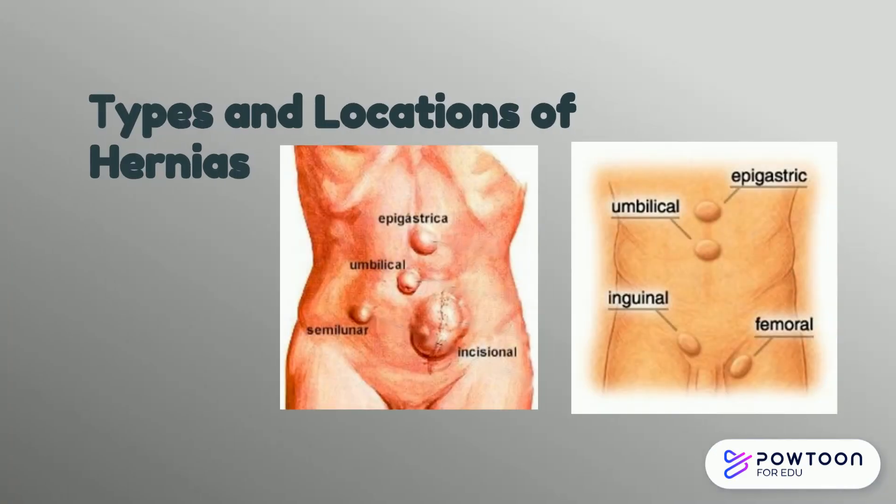While inspecting the abdomen, you may visualize hernias. Here are some frequent sites of hernias. Pay attention to the umbilicus area, the epigastric area, as well as the incisional area. The other frequent area is the femoral or inguinal hernias.